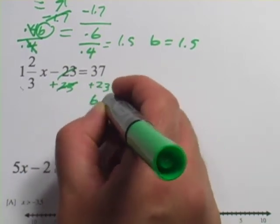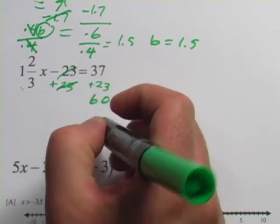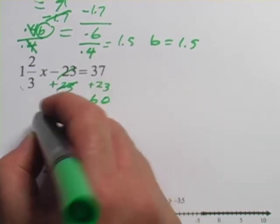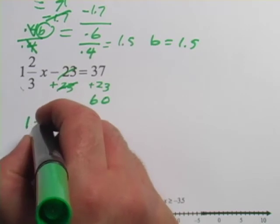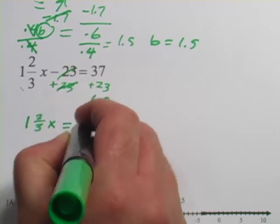Over here, what do we get? 60. 37 plus 23 is 60. So now I've got, well let me write it down here, 1 and 2 thirds x equals 60.